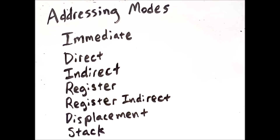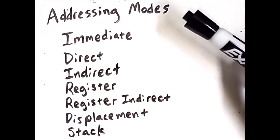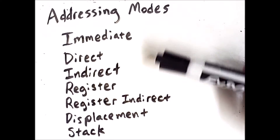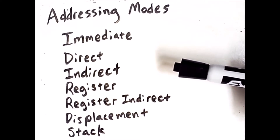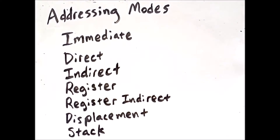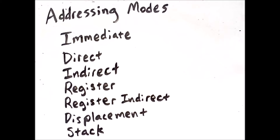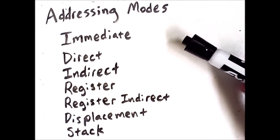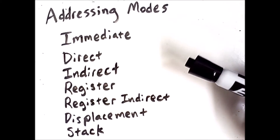We've talked previously about the operands that machine instructions can perform operations on, but now we will talk about how machine instructions retrieve those operands from various locations. This video is about addressing modes, and each one describes a way that a machine instruction can specify how to retrieve a value which then has some operation performed on it. Note that any individual instruction can actually use multiple distinct addressing modes for separate operands.